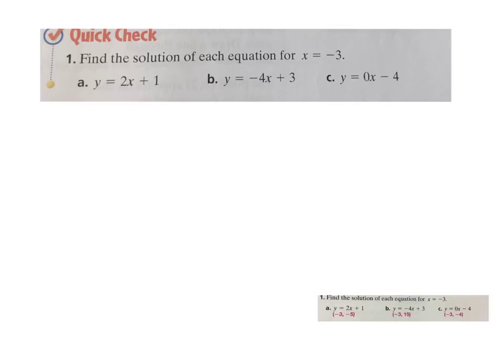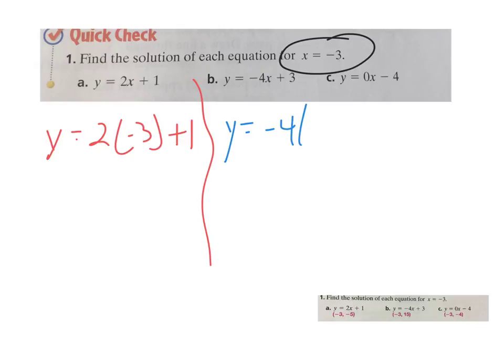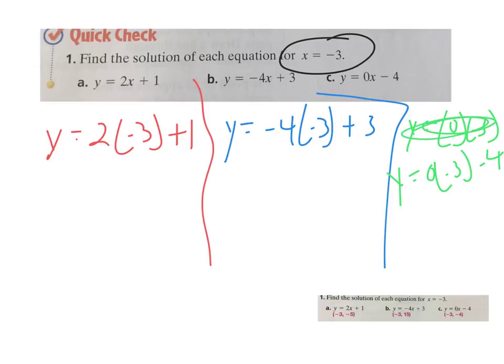So on this first one here, it says we're going to plug in negative 3 for each of them, so the same number you plug in each time. So again, in for x. So y equals 2 times negative 3 plus 1. On b, on the second one, y equals negative 4 times negative 3 plus 3. And then on c, we'll go back and work all these here in just a second, y equals 0 times negative 3. We'll rewrite it. y equals 0 times negative 3 minus 4.